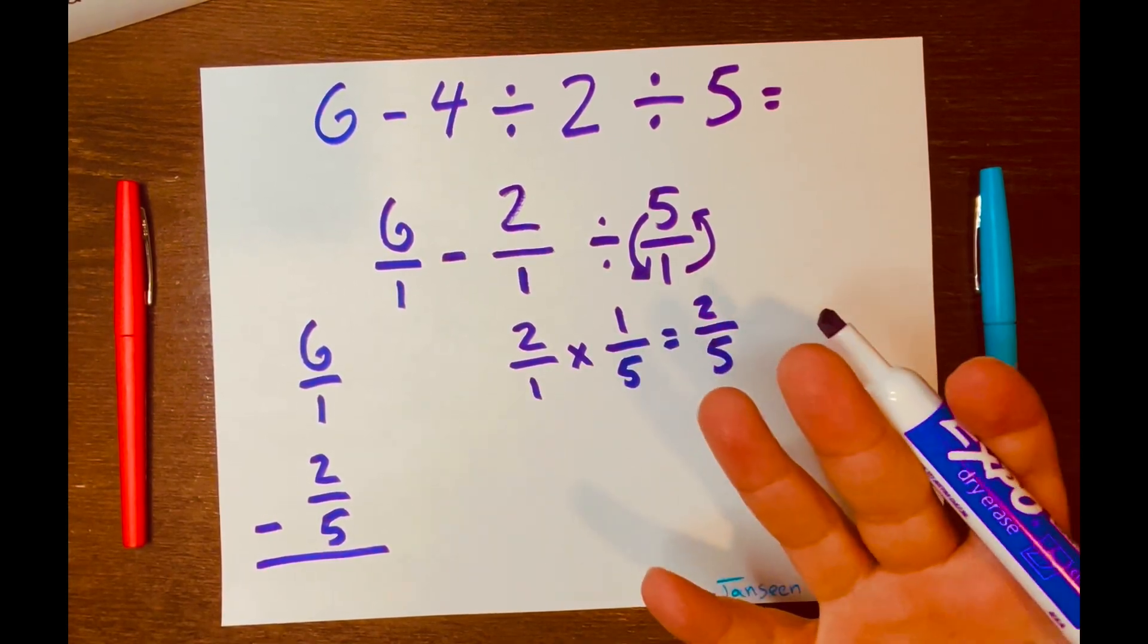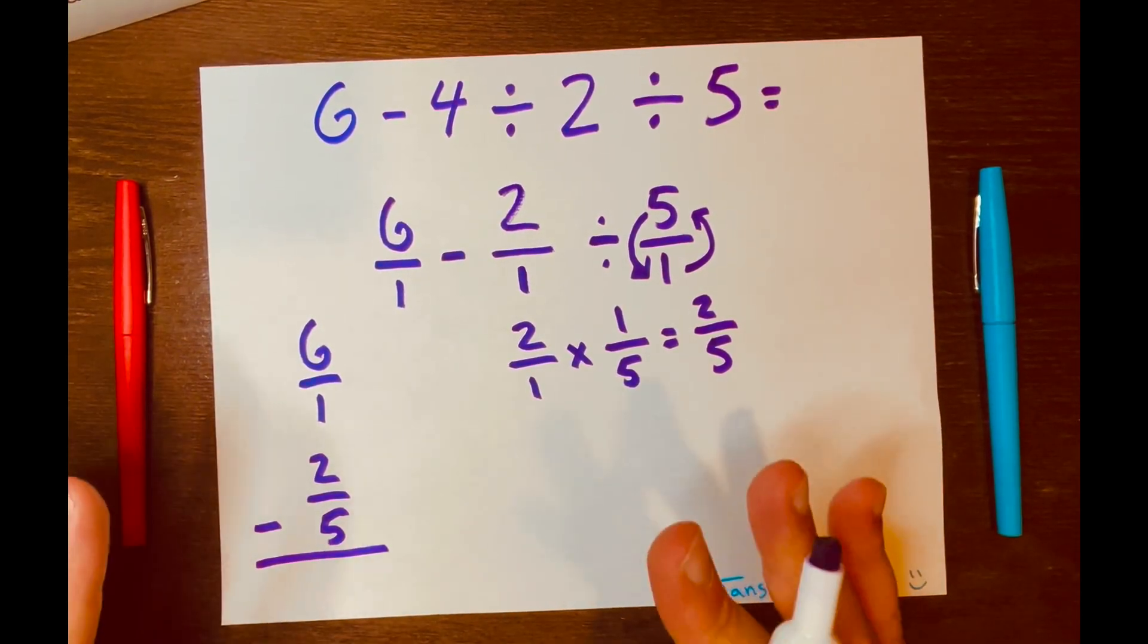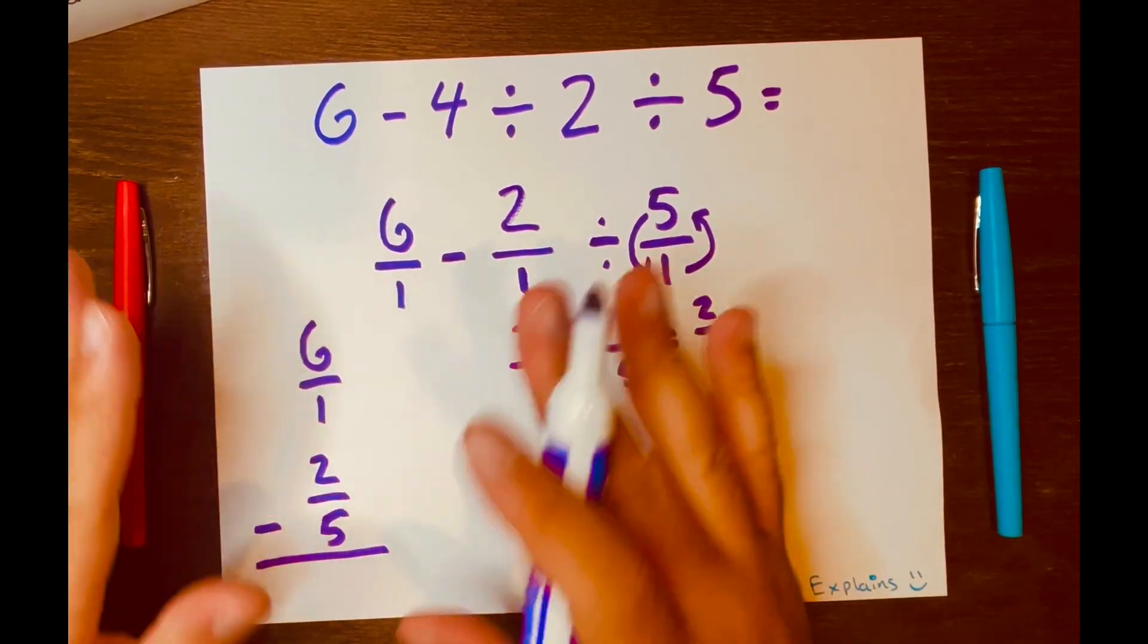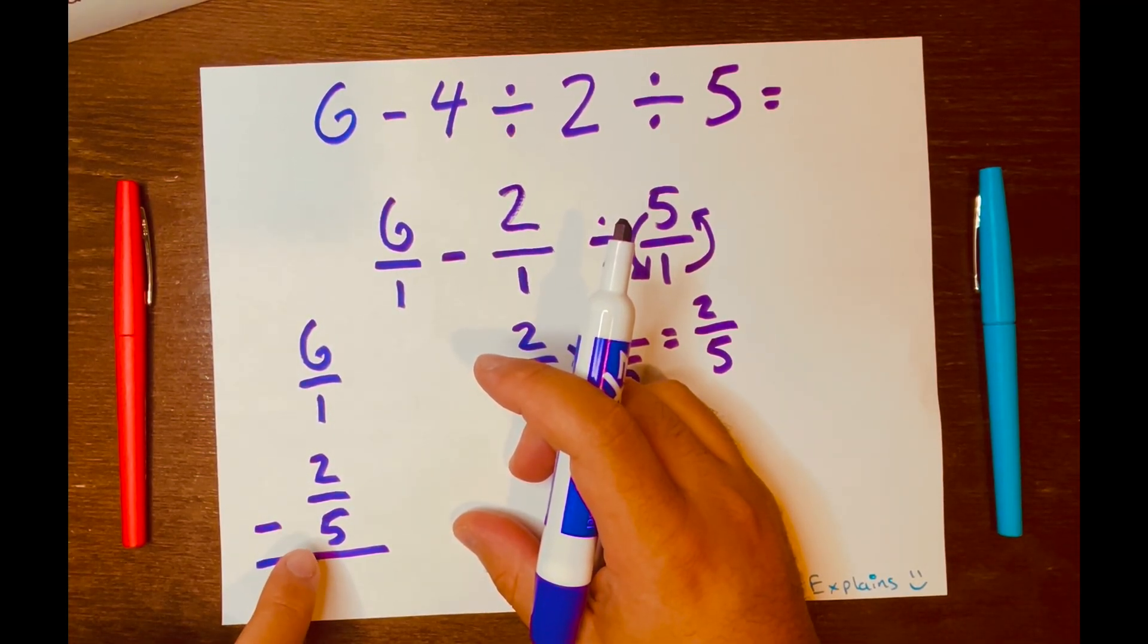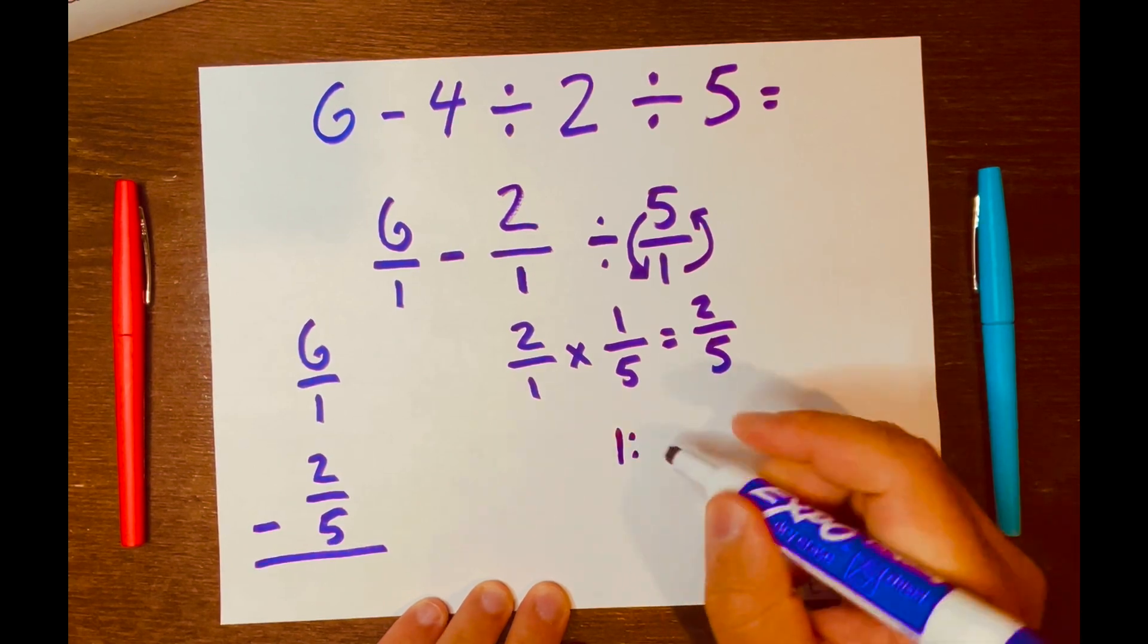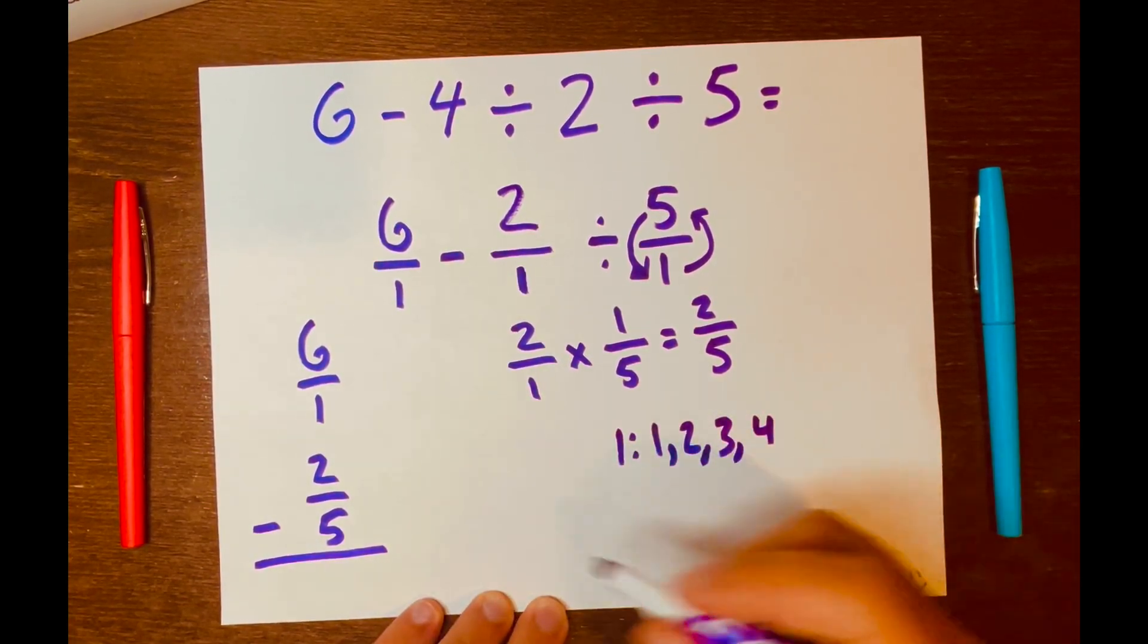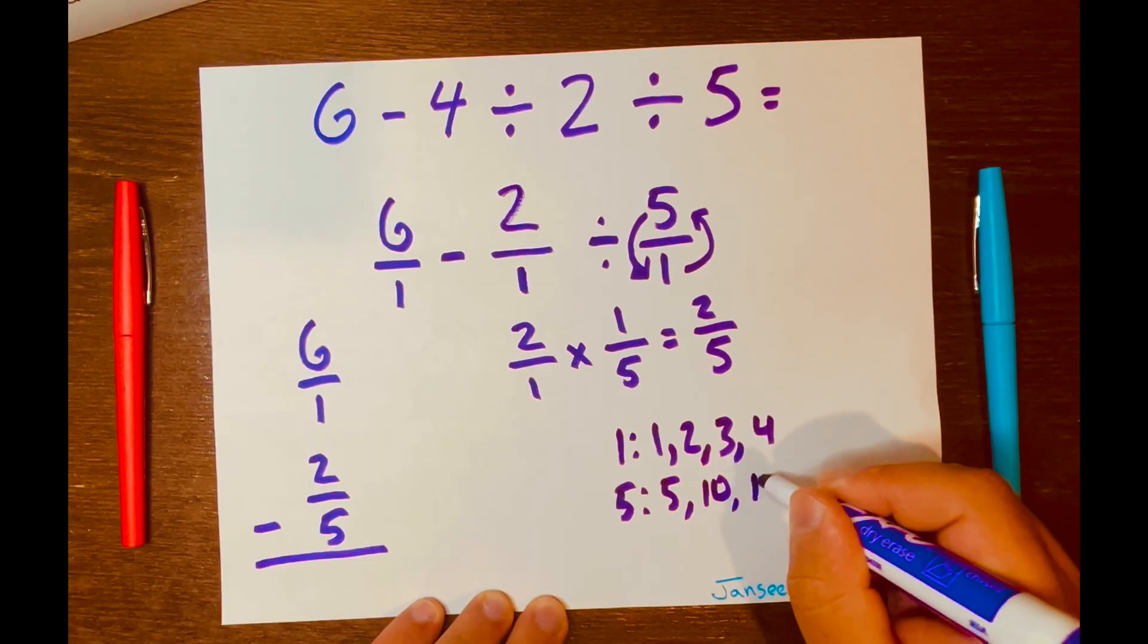So how can we make both of these denominators the same? Well, we need to find the lowest common multiple of these denominators. First, we need to list the first four multiples of this one and the four multiples of the second denominator. So the multiples of 1 is 1, 2, and I like to stop at four, 3 and 4. And then let's look for the multiples of 5. So we got 5, 10, 15, and 20.